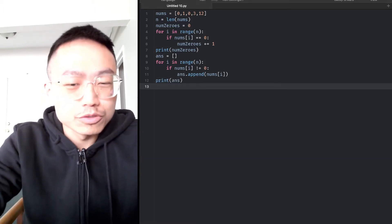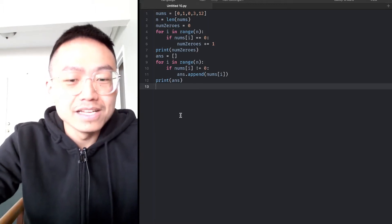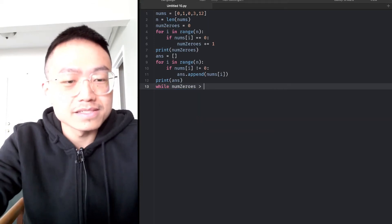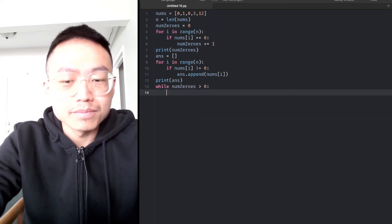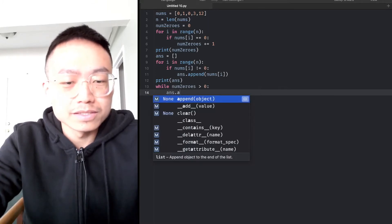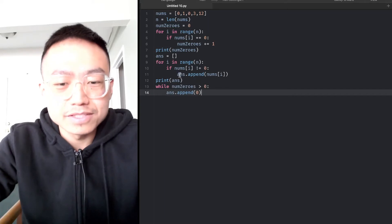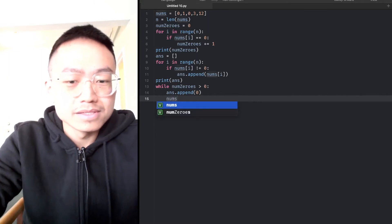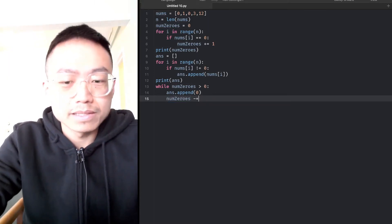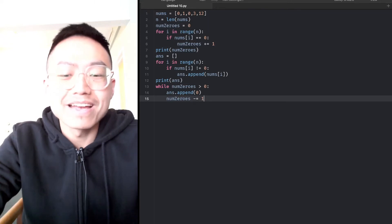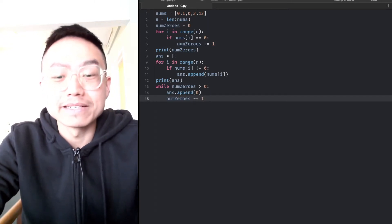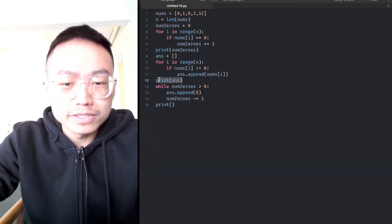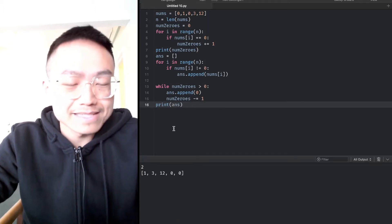Then we want to move all the zeros to the end. So while numZeros is bigger than zero, we append zero to the end of the array. And numZeros decrements by one because we just appended a zero. We can print them out to make a test. Yes, we did it.